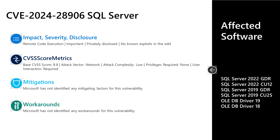Make sure to update that OLEDB driver if you're using it in your environment. The affected versions of SQL listed are those currently in support. If you're running an older version of SQL Server, you'll first need to upgrade to a supported version, then install the security update. If you're already running a supported version, it's just one step — installing the security update. There are no documented mitigations or workarounds. Affected software includes SQL Server 2022 GDR and Cumulative Update 12, SQL Server 2019 GDR and Cumulative Update 25, and OLEDB Driver 18 and 19.